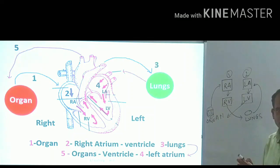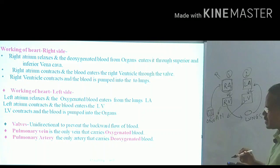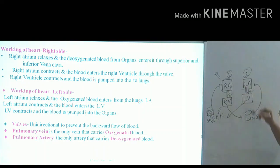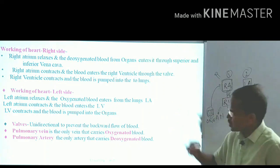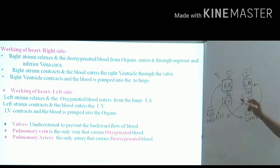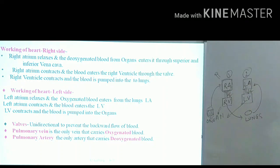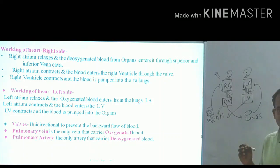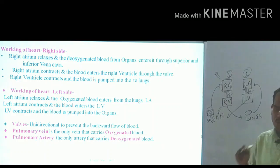Between the chambers there are valves. These valves ensure that blood does not flow in a reverse direction. That is why valves are given between the atria and ventricles. Next we need to understand pulmonary artery and pulmonary vein.